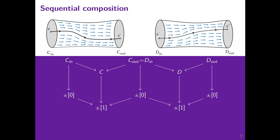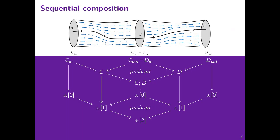Now let's see how to compose cobordisms. Given two cobordisms C and D such that C-out equals D-in, the way to compose them is to glue them along their common interface. This defines C semicolon D, the support of the composite cobordism. We perform the corresponding pushouts at the level of templates, defining template 2. The universal property of the upper pushout gives a map from CD to template 2, and there is a map from template 2 to template 1, giving us a cobordism whose support is CD.